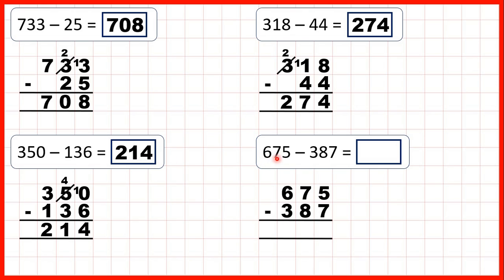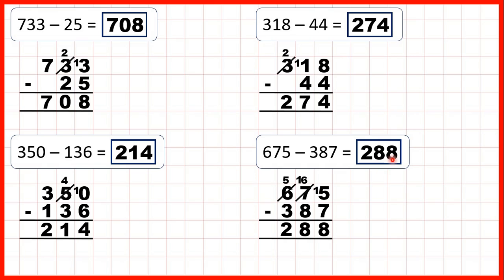And finally, we have 675 minus 387. Starting with our ones, 7 is larger than 5, so we go to the left, 1 less, 1 in front, and 15 minus 7 is 8. Now onto our tens, we have 6 minus 8, but 8 is larger than 6, so we go to the left, 1 less, 1 in front, and now we have 16 minus 8, so that's 8. Onto our hundreds, 5 minus 3 is 2, so we have 288.